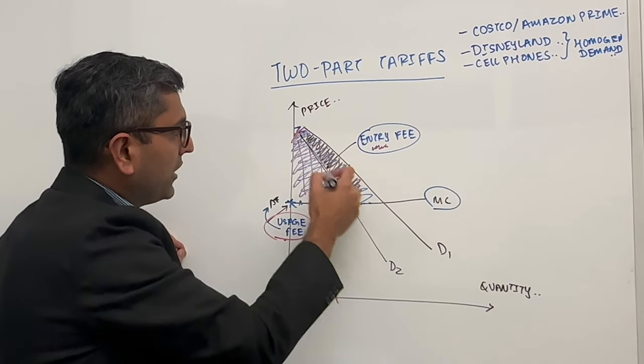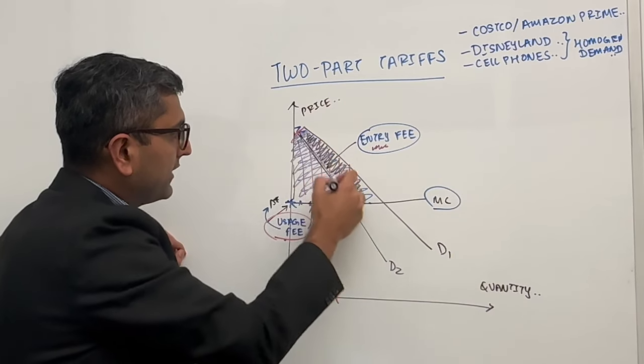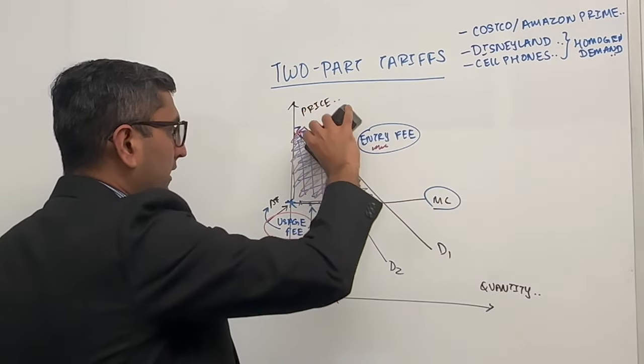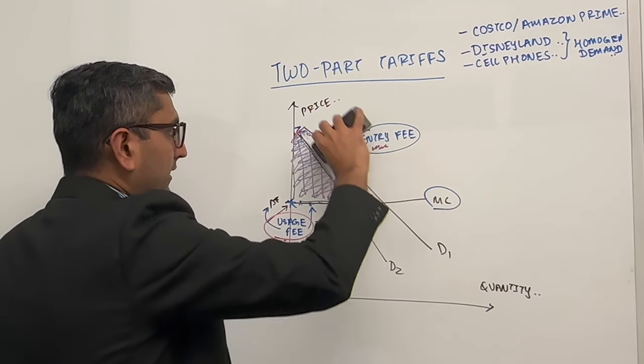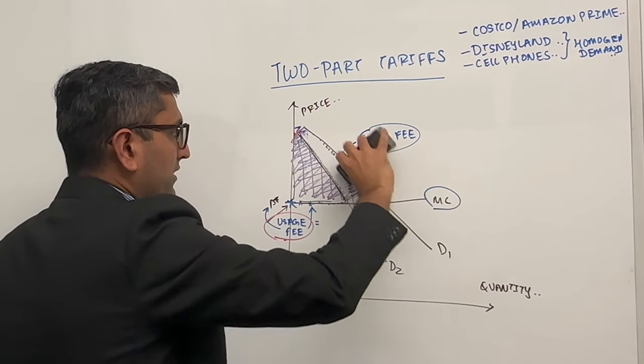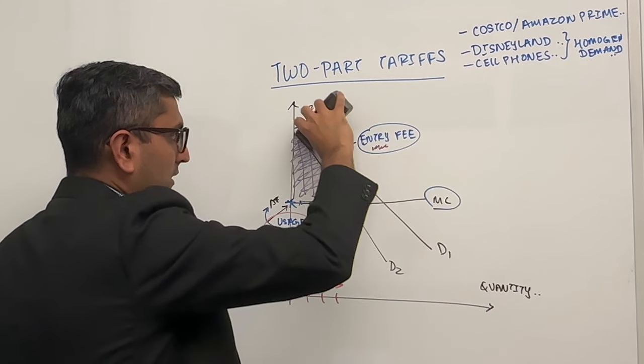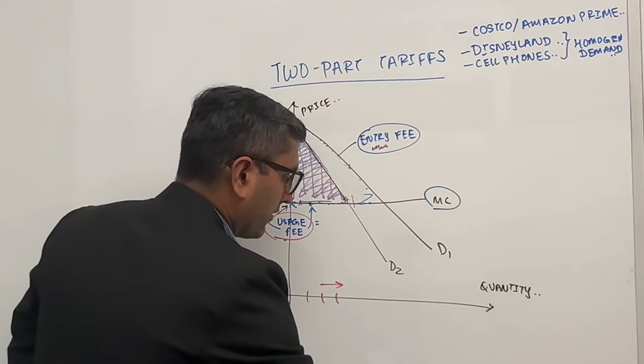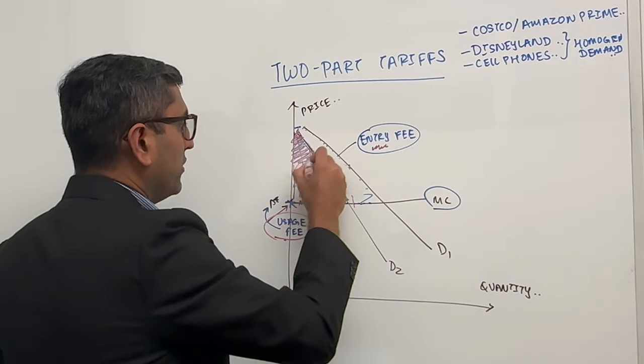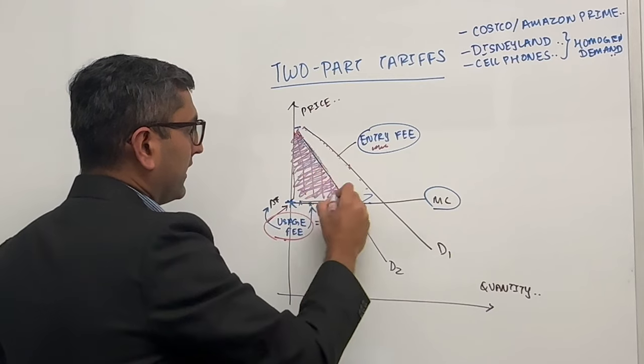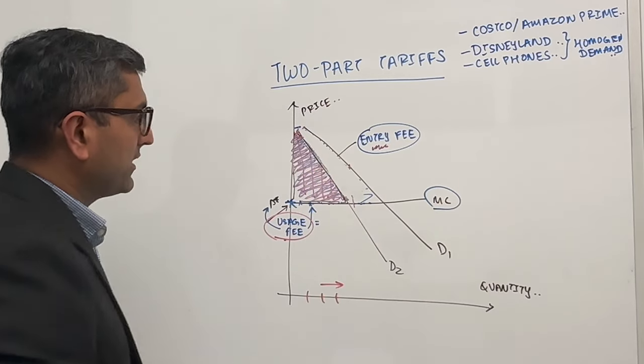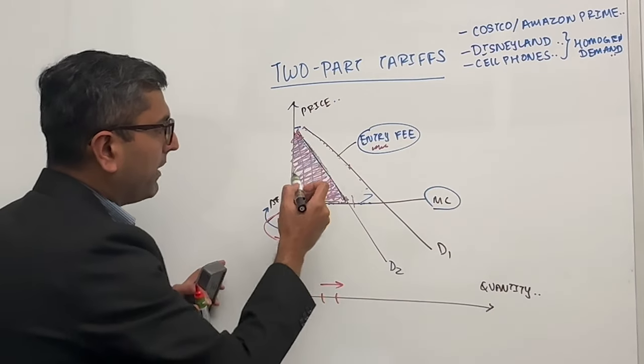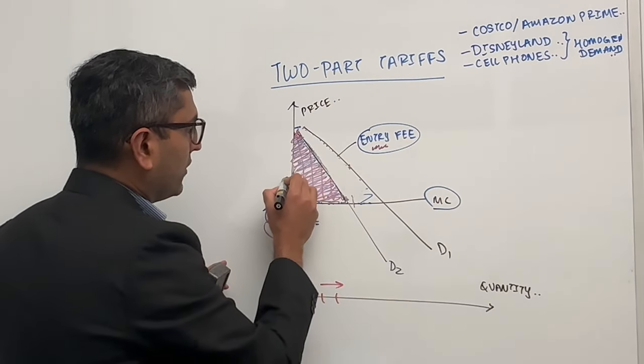So this goes away from you. So you can only charge them this entity. So what we see is if you had two customers with two demand, all of a sudden the producer surplus reduces. Yes, the two customers. And so now this still remains your producer surplus because that's your new entity.